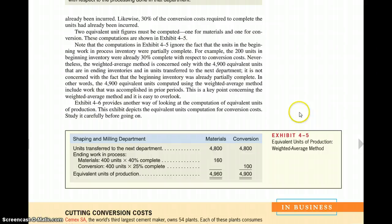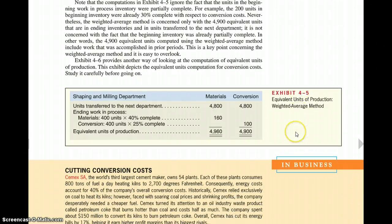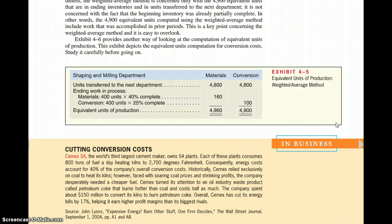Here if we scroll down, we can see another chart looking at the equivalent units of production. So it's using the same numbers. We're transferring 4,800 of materials, 4,800 conversion. The ending work in process, we're going to take materials times the 400 units times 40%. In conversion, 400 units times 25%. We'll get 160 for materials, 100 for conversion, and we'll add them together. This one here, Exhibit 4-5, is similar to Exercise 4-2 that you'll be asked to complete later in the videos. We'll have different videos.